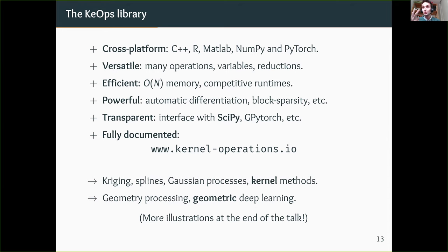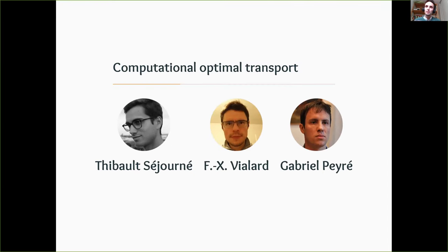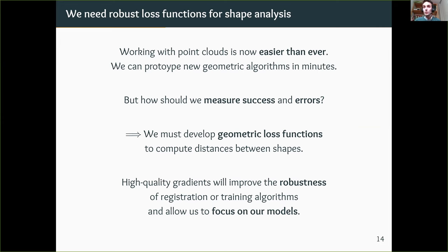Now let's talk about the second tool: computational optimal transport, work done with Thibaut Séjourné, François-Xavier Vialard, and Gabriel Peyré. With PyTorch and KeOps, working with point clouds has become easier than ever, and we can prototype new geometric algorithms in minutes on the GPU. But then the question is: how do you measure success and errors? We must develop geometric loss functions to compute distances between shapes — high-quality gradients that drive us toward good minima and improve the robustness of registration or training algorithms.